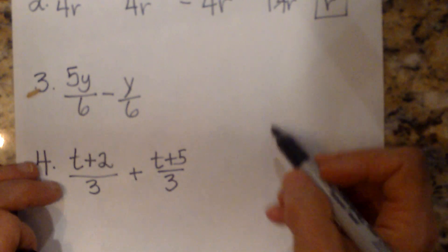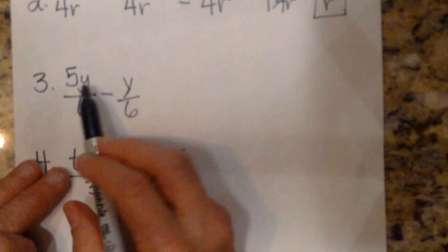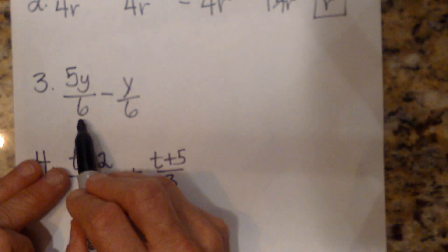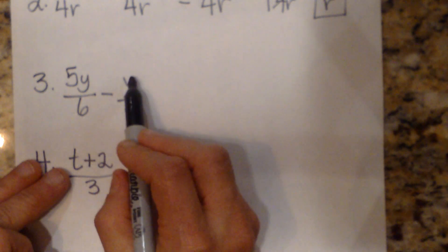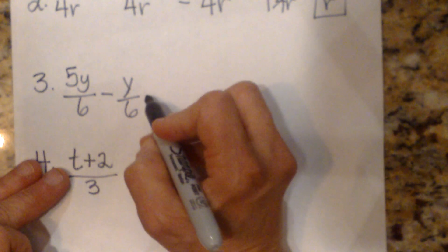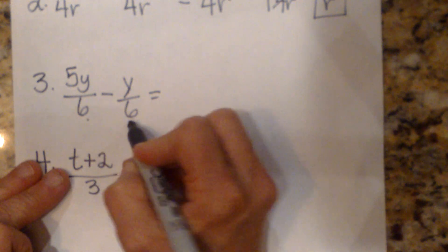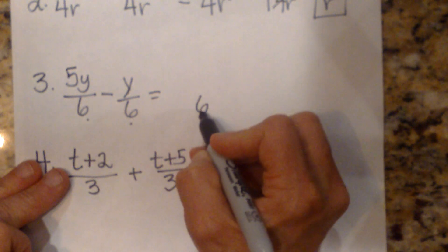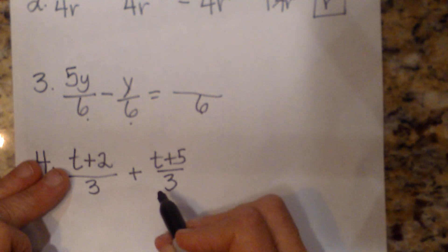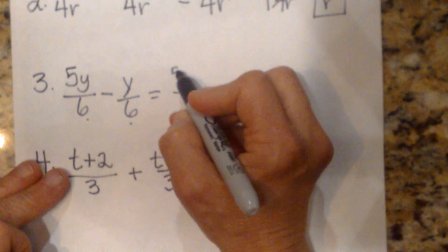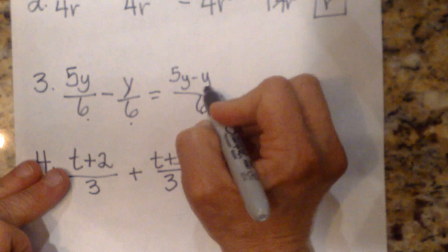Okay, so let's try another one, another subtraction. So we have 5y over 6 minus y over 6. So again, we have a common denominator. Let's bring the common denominator of 6 over. The numerator is 5y minus y.